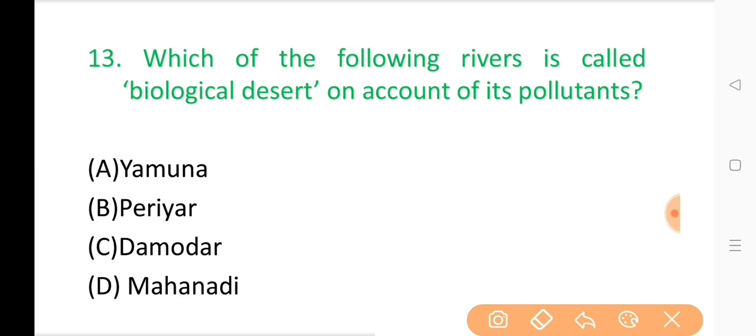Question No. 13: Which of the following rivers is called a biological desert on account of its pollutants? The correct answer is Option C: Damodar.